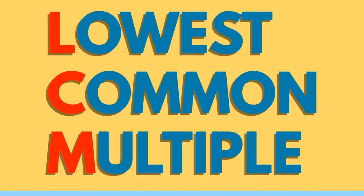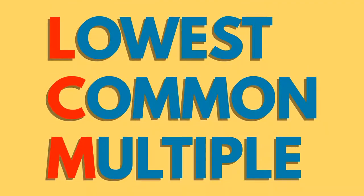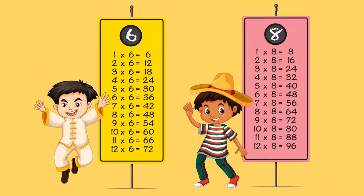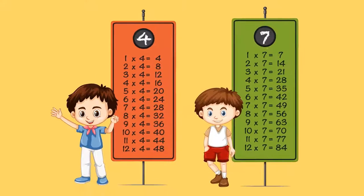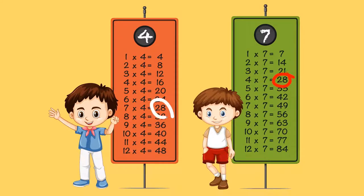The lowest common multiple of two numbers is the first number to appear in both their times tables. We can use this to find the lowest common denominator when we add or subtract fractions. The lowest common multiple of 6 and 8 is 24. For the numbers 4 and 7, it's 28.